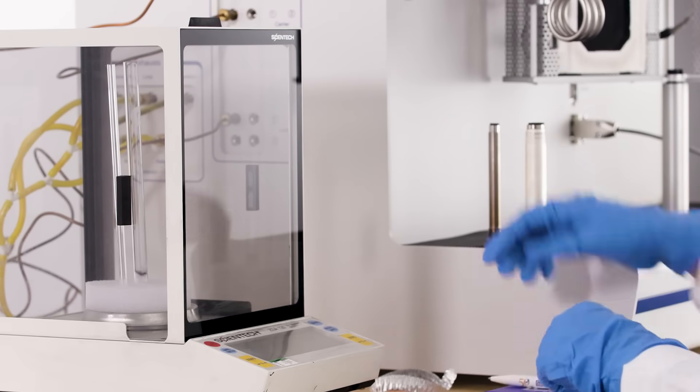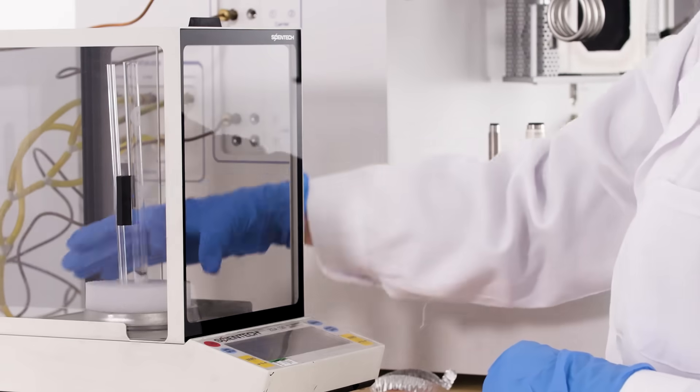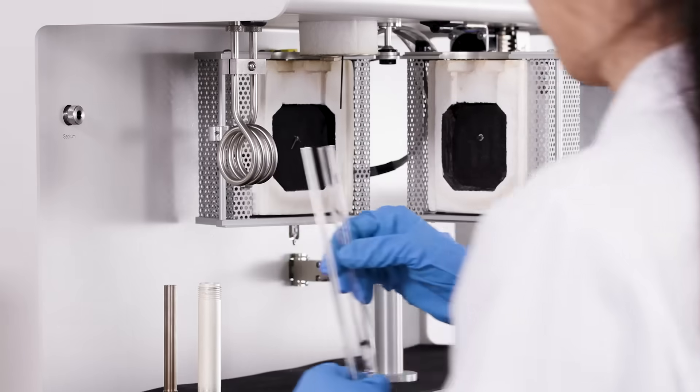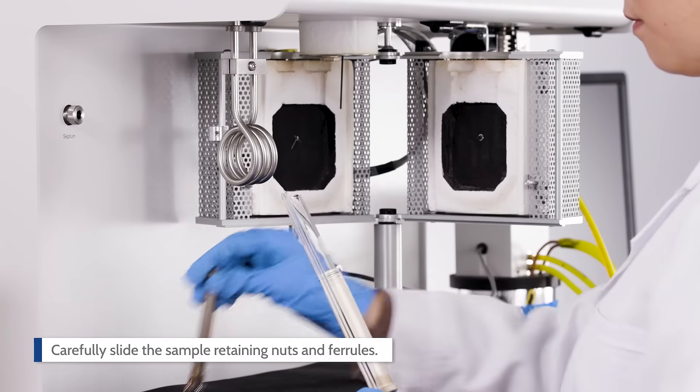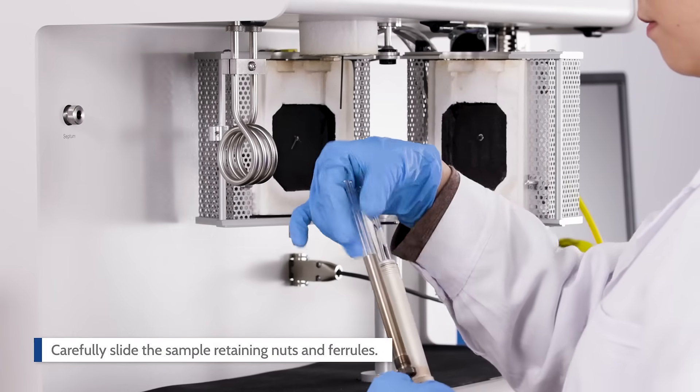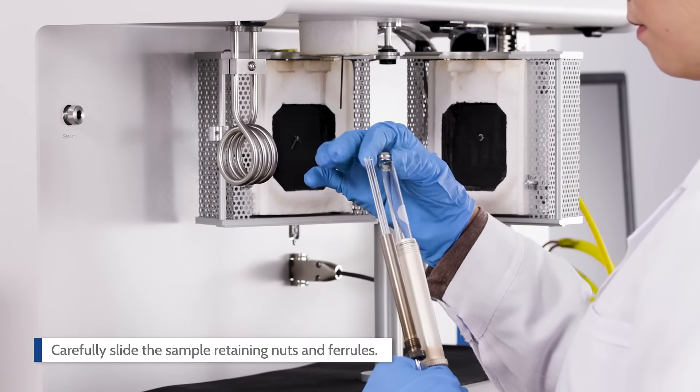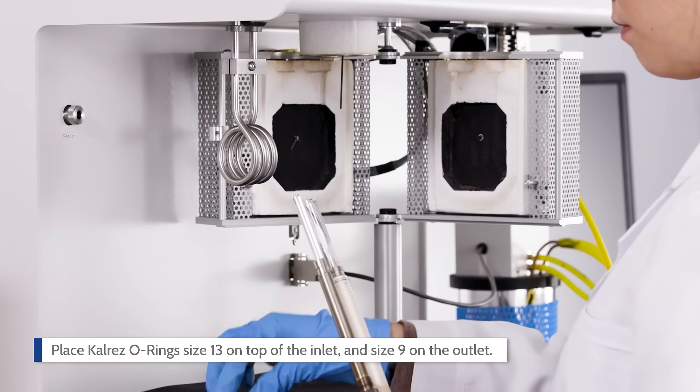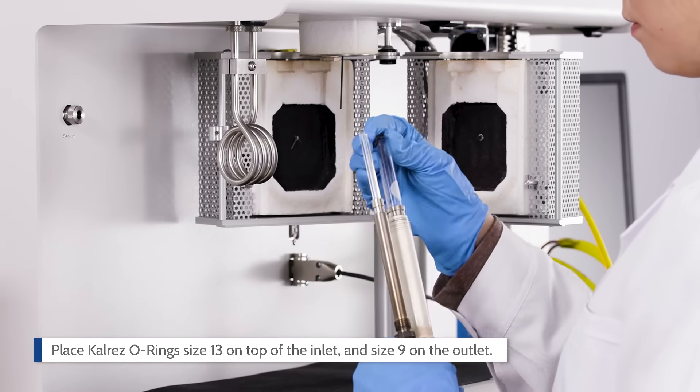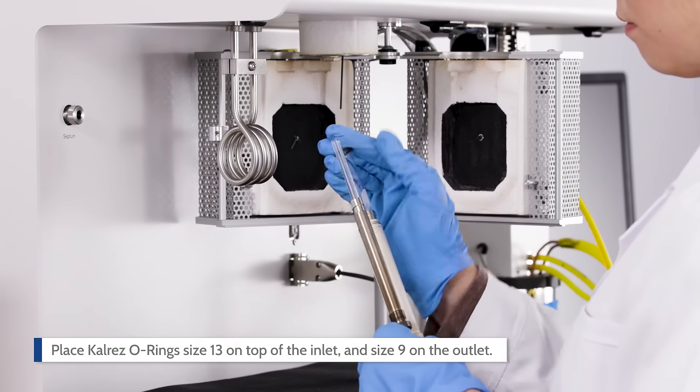Carefully slide the sample retaining nuts and ferrules over the inlet and outlet of the sample tube. Place CalRes O-ring size 13 on the tip of the inlet and size 9 on the outlet.